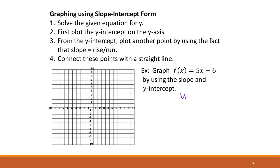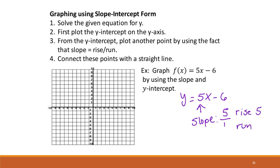We have y equals 5x minus 6. Whatever is in front of x is our slope. We like slopes in fraction form, so since it's 5, we put that over 1 — anything divided by 1 is just itself. So this means we're going to rise 5 and run 1. Then we have minus 6; the negative goes with it because our form is y equals mx plus b. So we have a y-intercept of 0, negative 6.